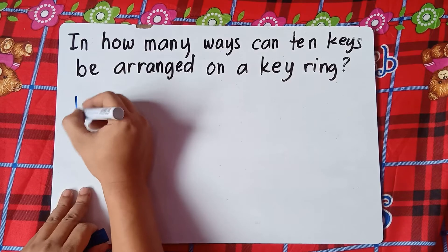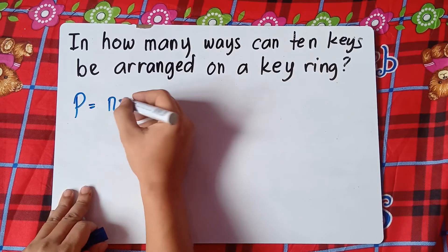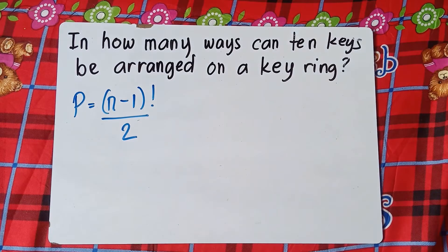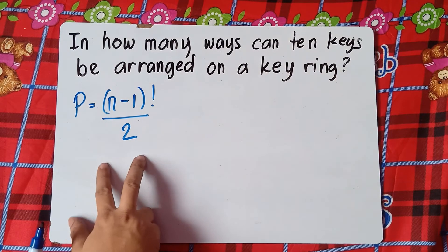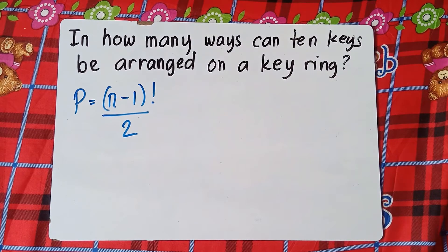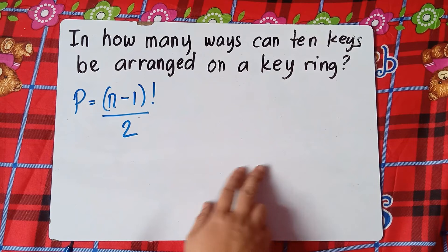The formula for key rings or necklaces is P equals N minus one factorial divided by two. When do we use this formula? When dealing with key rings, diamonds, necklaces, bracelets — examples like that. But if you're dealing with a round table, just use N minus one factorial.